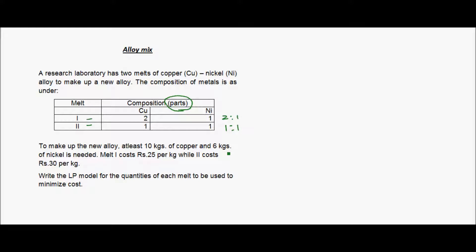To make up the new alloy, at least 10 kgs of copper and 6 kgs of nickel is needed. Melt one costs rupees 25 per kg while melt two costs rupees 30 per kg. We need to write the LP model for the quantities of each melt to be used to minimize the cost.